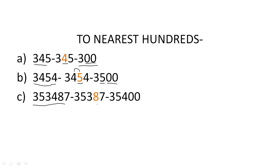Take another example. If you are doing rounding off to the nearest 100s in 35,387, then check the place of 10s, which is 8. Since 8 is greater than 5, add 1 to the left digit: 3 plus 1 equals 4. The rest of the digits will be 0, 0, and you will get the number 35,400.